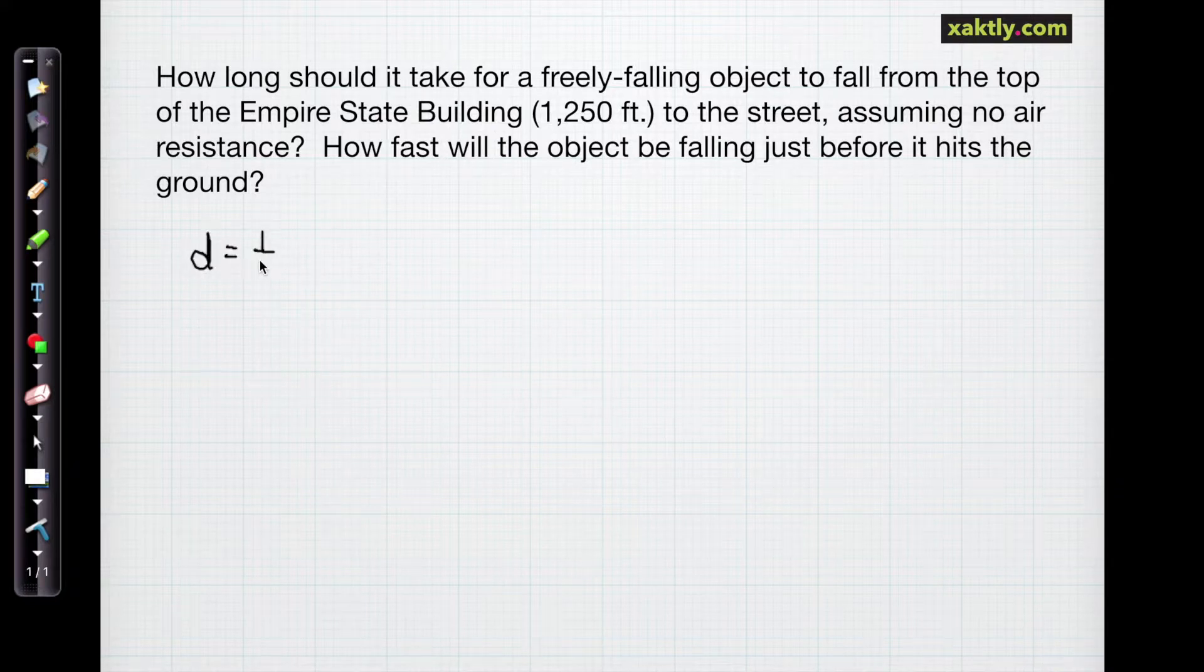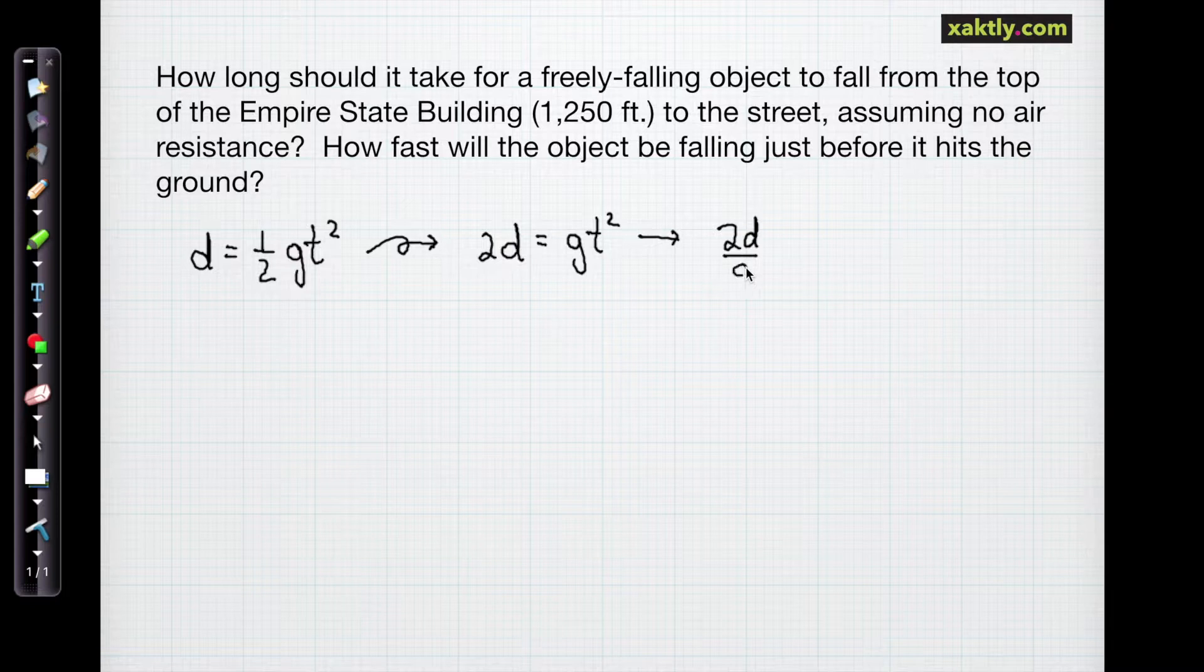So we'll write out our distance equation. Distance is 1/2 gt². That's the free fall formula. And we're going to have to rearrange that. So we'll multiply both sides by 2. We're trying to solve for the time. So 2d is gt². Now we'll divide by the acceleration of gravity g. So 2d over g is now equal to t². And finally to solve for time, you're going to have to take a square root. So the time is equal to the positive square root of 2d over g. We don't care about the negative square root.